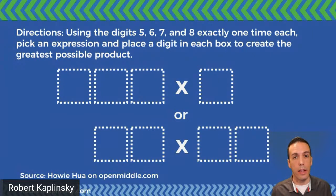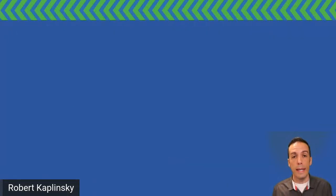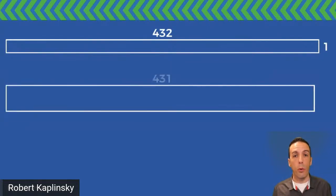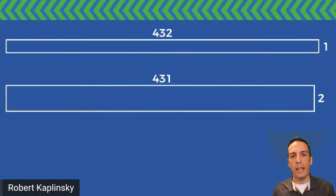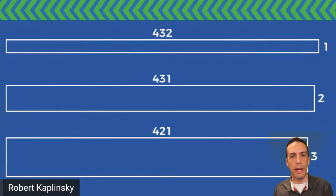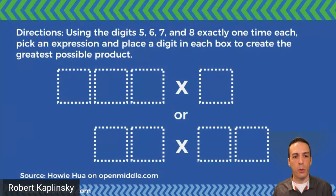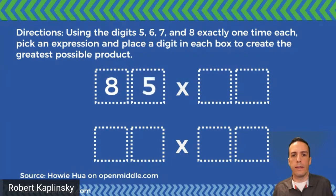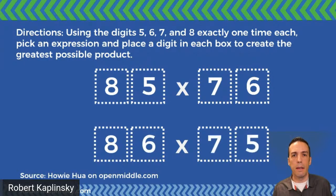Kids might even approach it geometrically. Imagine if we were doing the same problem with four, three, two, and one. Kids might think of it like a rectangle: 432 by one is one way of doing it, but if we did 431 by two — even if you don't do the math, if you just think conceptually — one 432 is not going to be nearly as much as two 431s, or three 421s. You start to realize that the closer you get to both sides being equal, making the rectangle into a square, the greater the value.